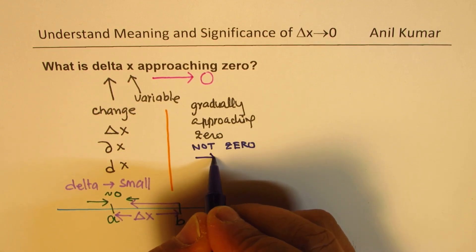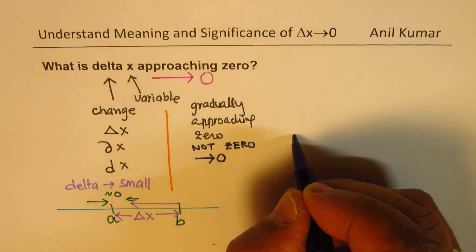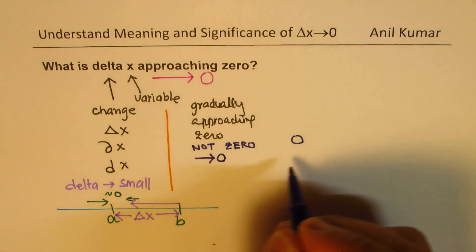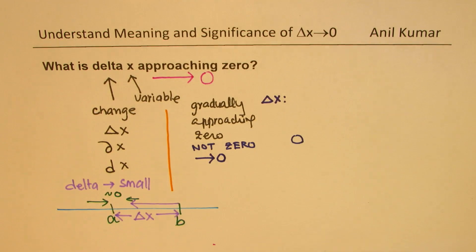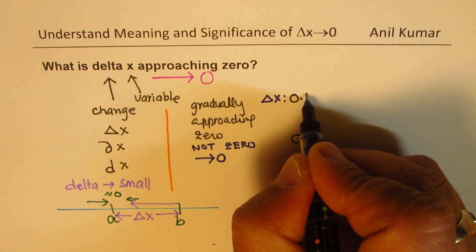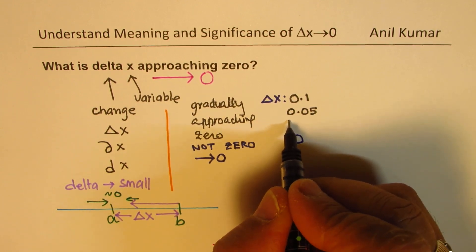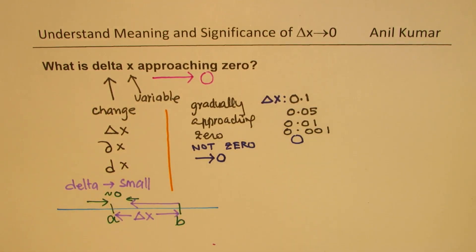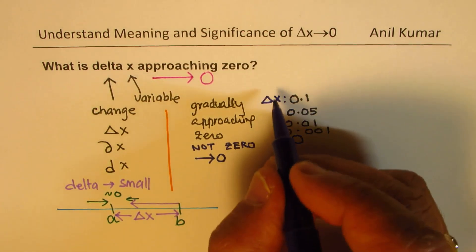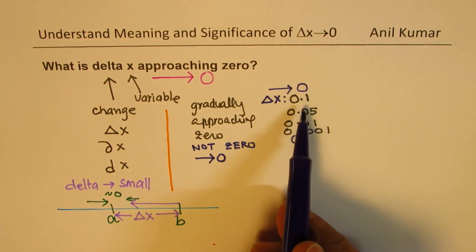Not 0, but only approaching 0. It is very, very close — that is what it means. Numerically, we could say the value of Delta X could be: we begin with 0.1, then make it closer so it becomes 0.05, then more closer it becomes 0.01, and then 0.001 — like this. If we decrease the value of Delta X in this order, then we say that Delta X is approaching 0.